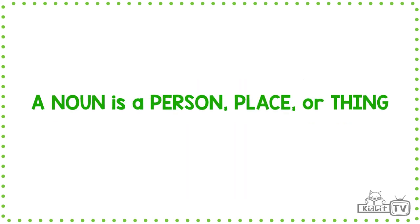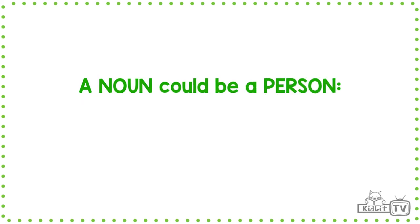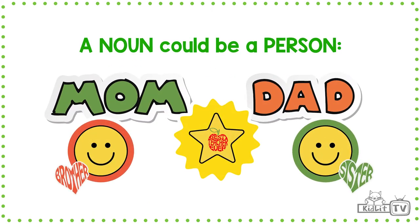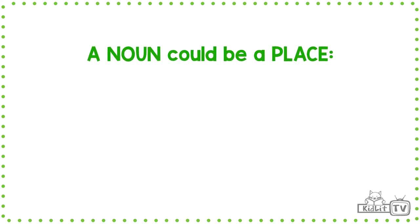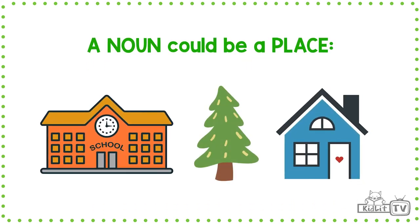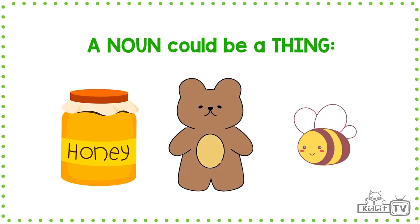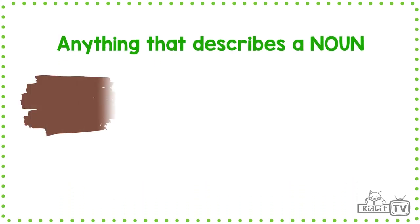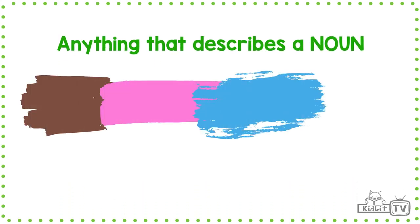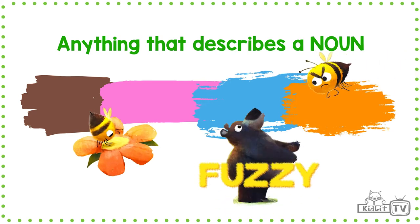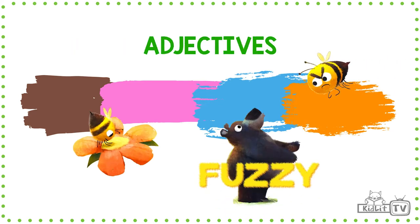A noun is a person, place, or thing. So a noun could be a person — a mom, dad, brother, sister, teacher. It could be a place — school, house, a tree. Or a thing — honey, a bear, or a bee. And so anything that describes that — brown, pink, blue, orange, busy, angry, fuzzy — those words would be adjectives.